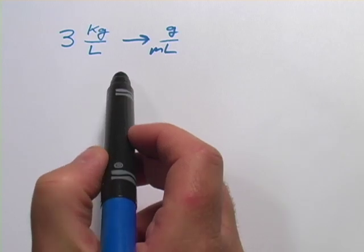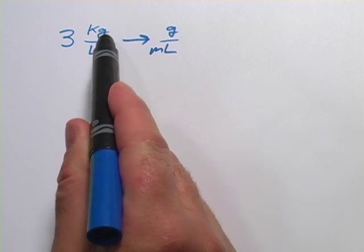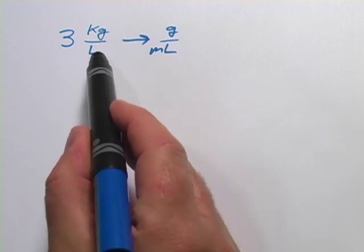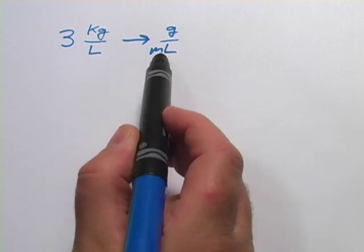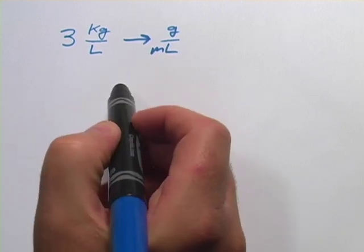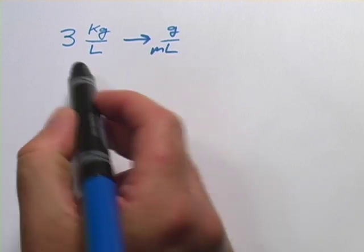What I would suggest is you take this in two different steps. Convert the kilograms to grams and then convert the liters to milliliters. So we've got two different conversions going on, so we're going to need two different scale factors here.